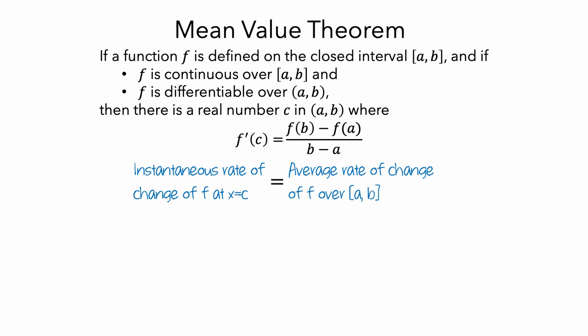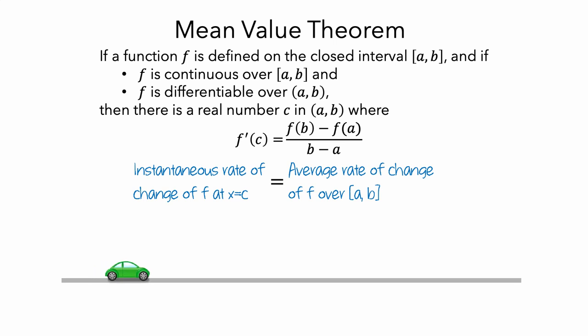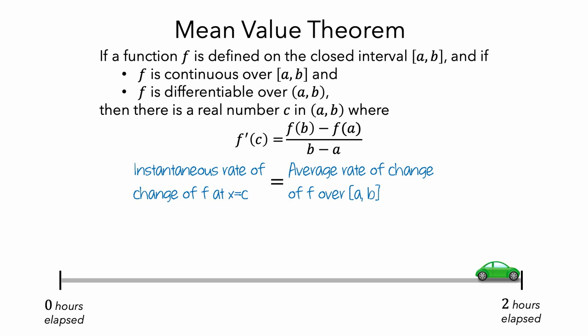To understand what this means in a context, let's think about the speed of a car driving on a 60-mile section of a road. As the car drives down the road, it speeds up. We'll let the function f represent the car's distance from its starting position in miles, and x will be the number of hours elapsed since it started driving. So the car starts at 0 hours elapsed and completes its drive after 2 hours have elapsed, and its distance at the start is 0 miles and at the end is 60 miles.